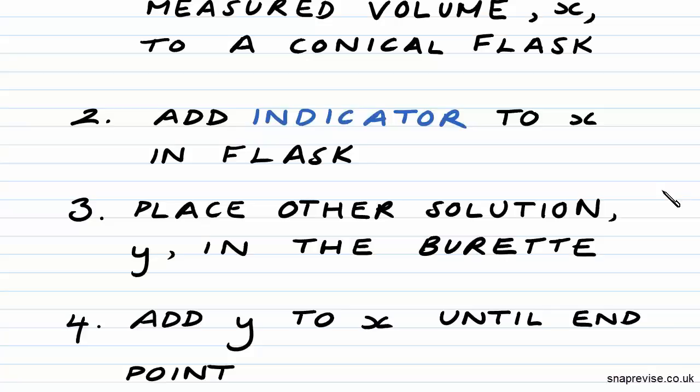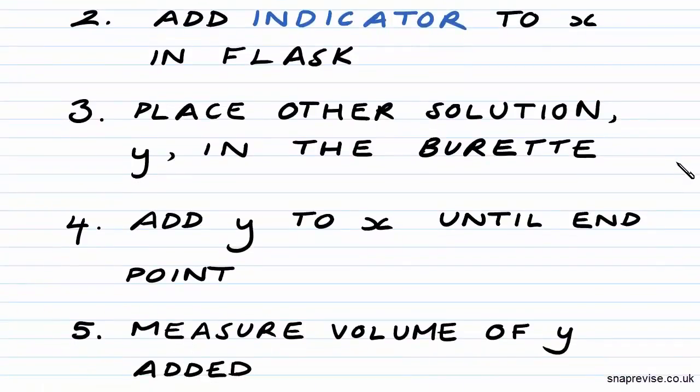So then we'll place our conical flask under our burette and add slowly Y from the burette into X until the endpoint occurs. Now, we'll know the endpoint occurs as a color change will have taken place as indicated by our indicator.